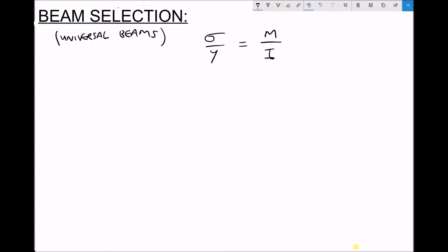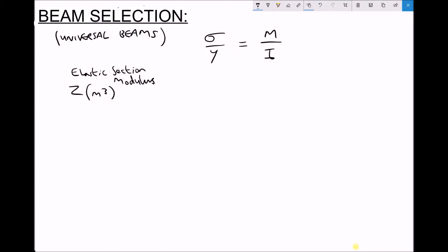For beam selection we're going to introduce a new variable called the elastic section modulus, represented by the letter z. The elastic section modulus has SI units of meters cubed, and we'll see why that's the case in a moment.